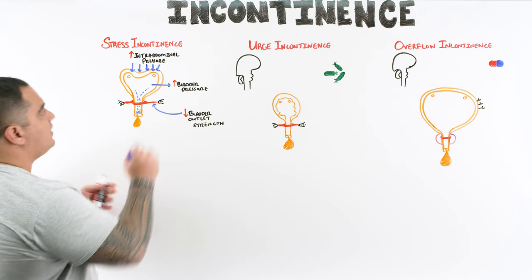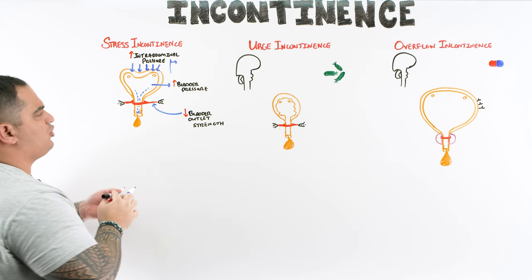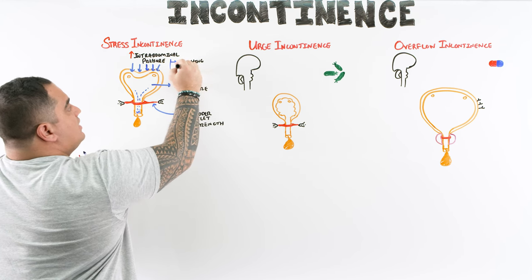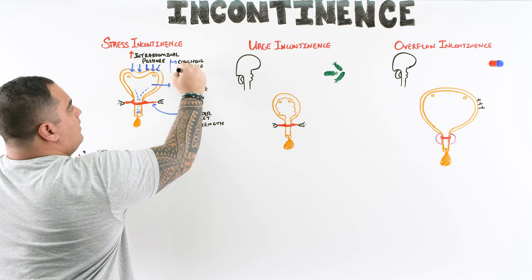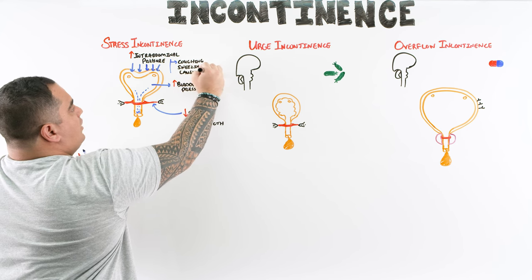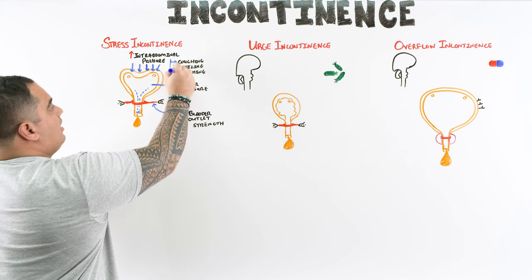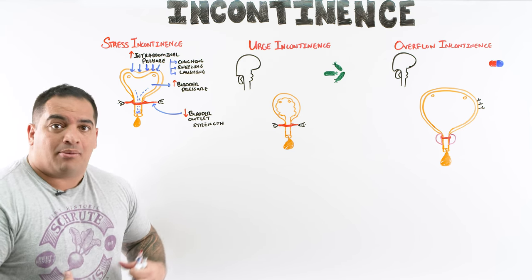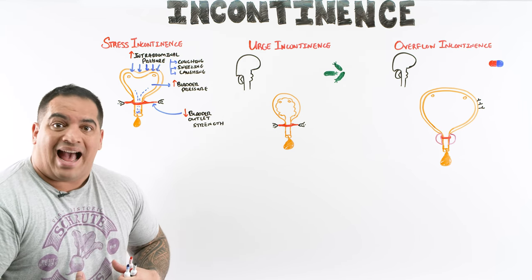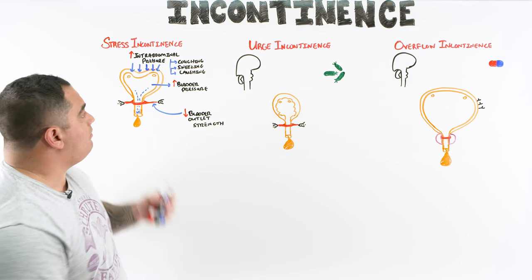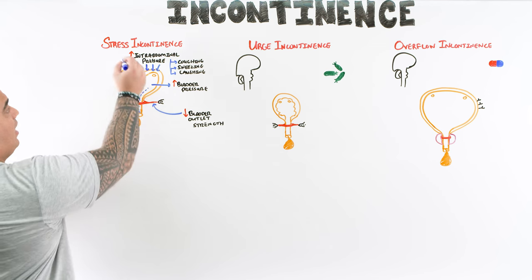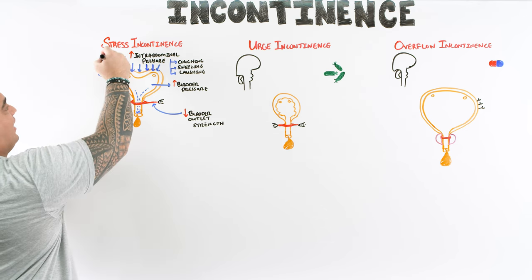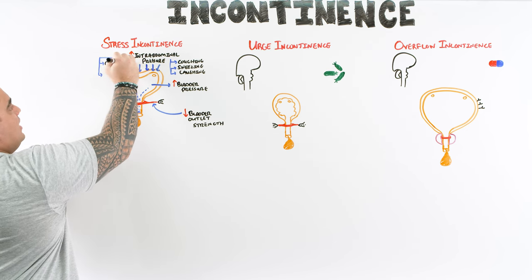The most common triggers for transient rises in intra-abdominal pressure are coughing, sneezing, and laughing — these cause quick rises in intra-abdominal pressure because you contract your abdominal muscles, decreasing the cavity volume. Longer-lasting factors include obesity and pregnancy, which also contribute to elevated intra-abdominal pressure.